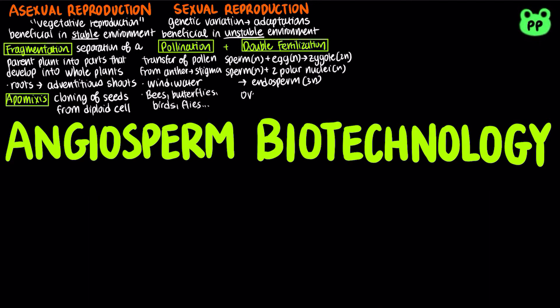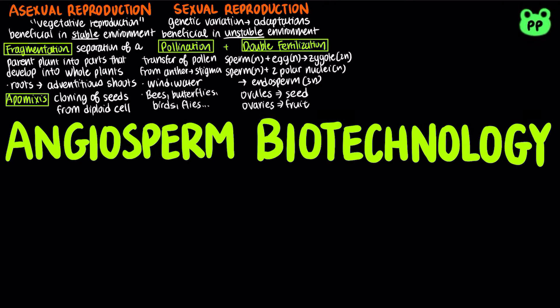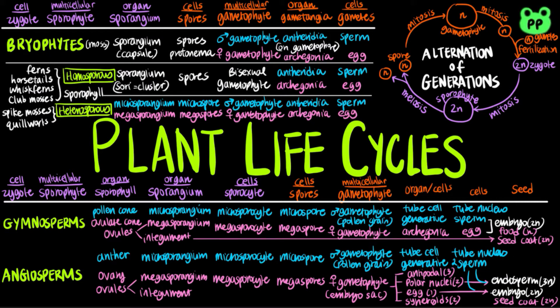After double fertilization, each ovule develops into a seed, and the ovary develops into a fruit enclosing the seed. More details on angiosperm sexual reproduction have been covered in my previous video titled Plant Life Cycles. Many angiosperms have mechanisms that make it difficult or impossible for a flower to self-fertilize, therefore ensuring genetic variation upon sexual reproduction.